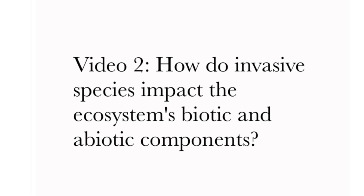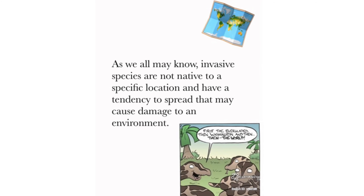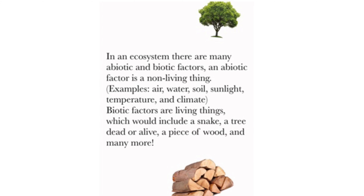How do invasive species impact the ecosystem's biotic and abiotic components? As we all may know, invasive species are not native to a specific location and have a tendency to spread that may cause damage to an environment. In an ecosystem, there are abiotic and biotic factors. An abiotic factor is a non-living thing — some examples are air, water, soil, sunlight, temperature, and climate. Biotic factors are living things, which can include a snake, a tree, dead or alive, a piece of wood, and many more.